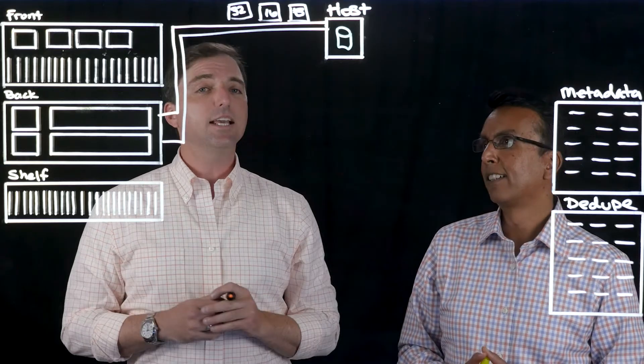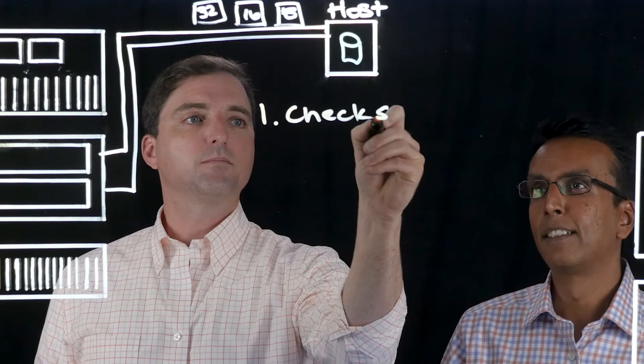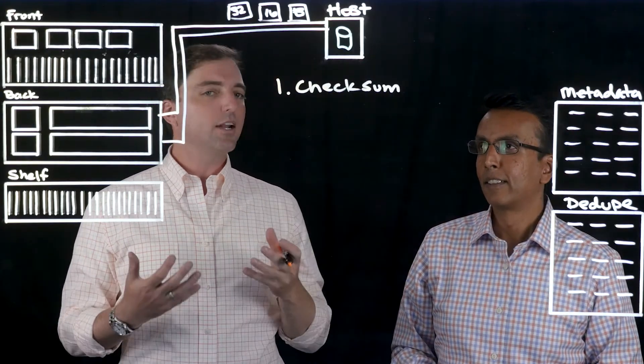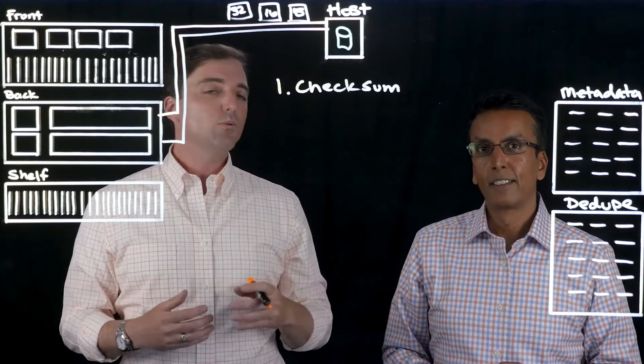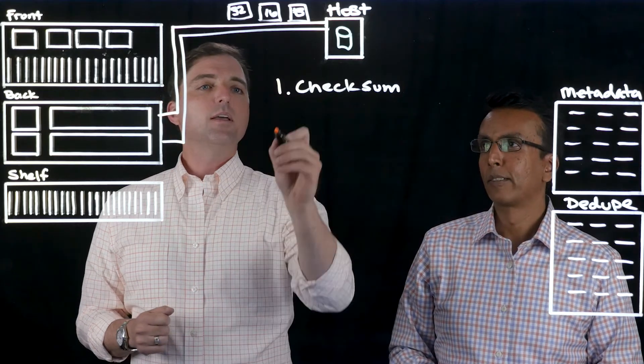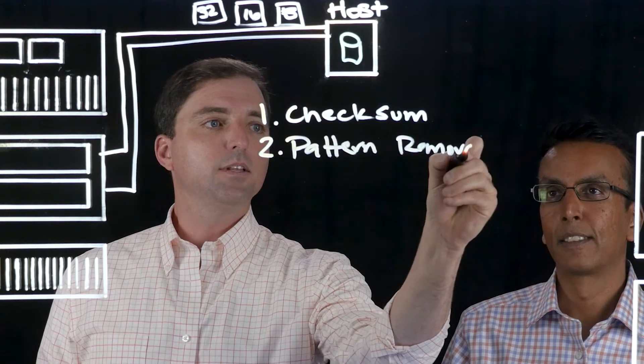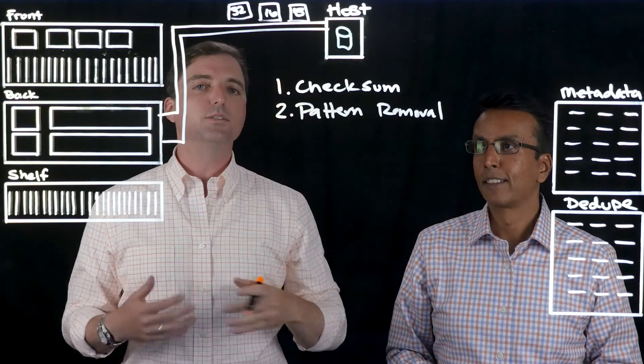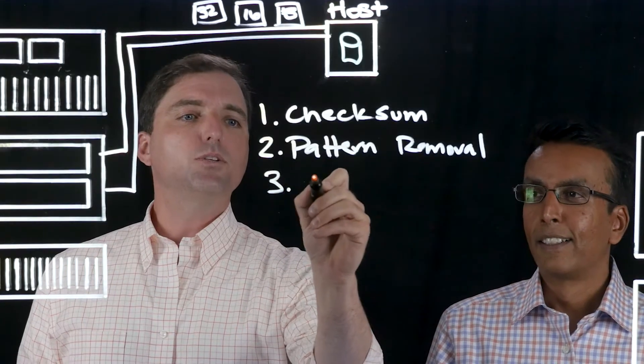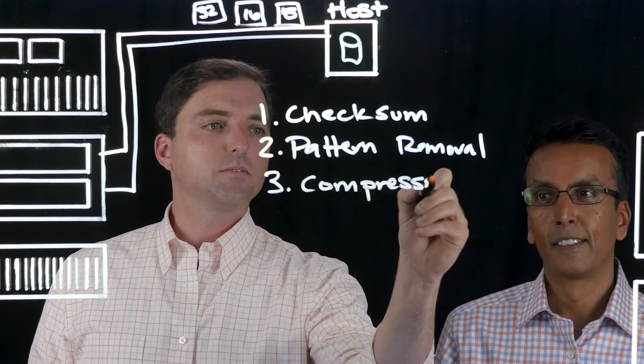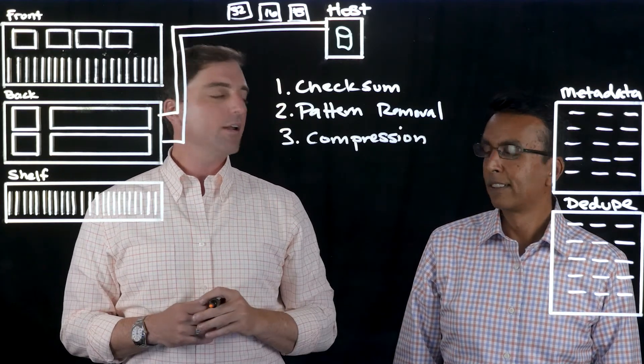The first step as soon as the data hits the controller buffers is we run a checksum. This ensures that we have a view into what the data looked like when it was originally written. In the event that the data doesn't have the same checksum, we will rebuild that from parity down the line. The next step is to do pattern removal. This looks for large strings of ones and zeros and removes them from the data blocks themselves. The third step is to do compression. This reduces the overall data set so that we can have a smaller form factor in our NVRAM devices.